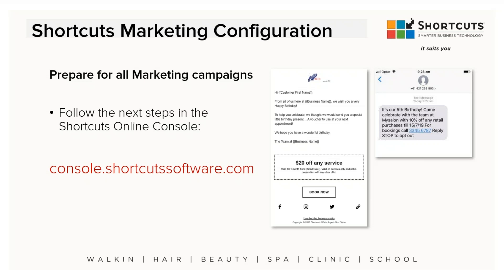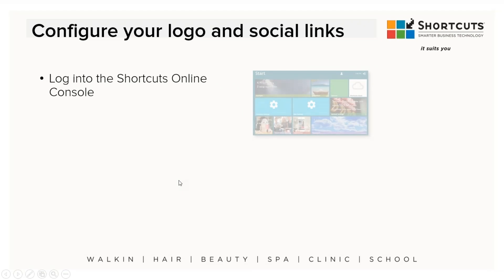To configure your actual campaigns, you don't do it in the Shortcuts point of sale — you configure them online. Any computer with an internet connection can do this. You're going to go to the Console, which most of you are familiar with — it's where you set up online booking, customer surveys, or give staff permission to look at appointments remotely. Once you're there, you'll do some configuration. Every email you send out can have your company logo and links to your social media.